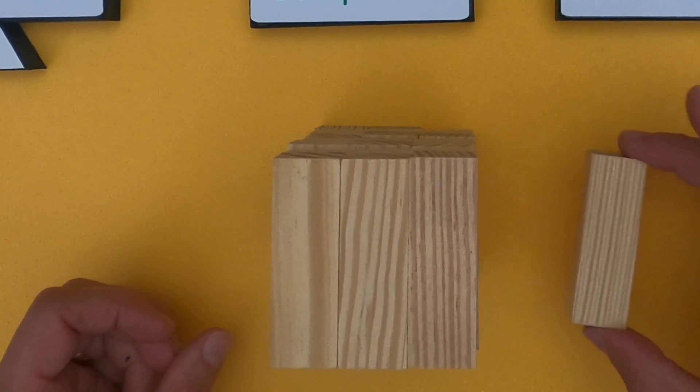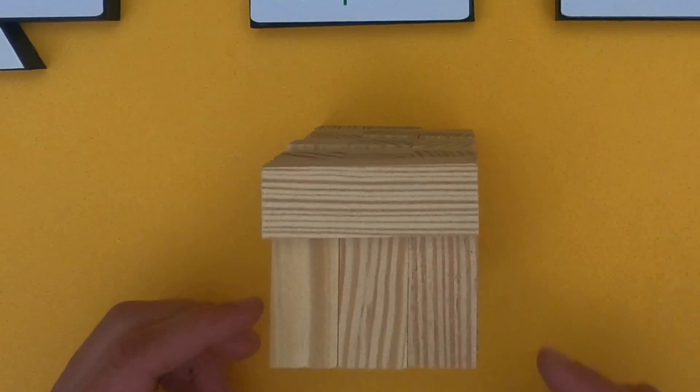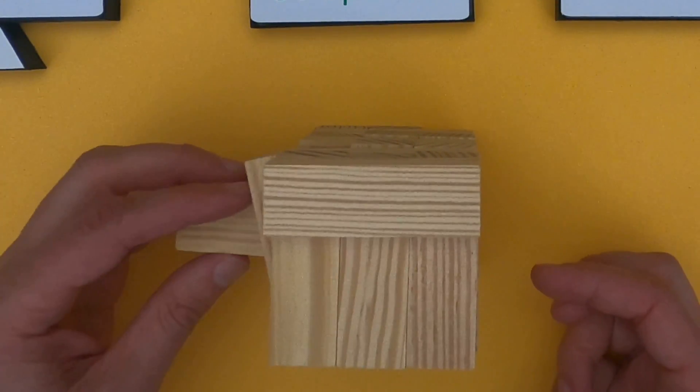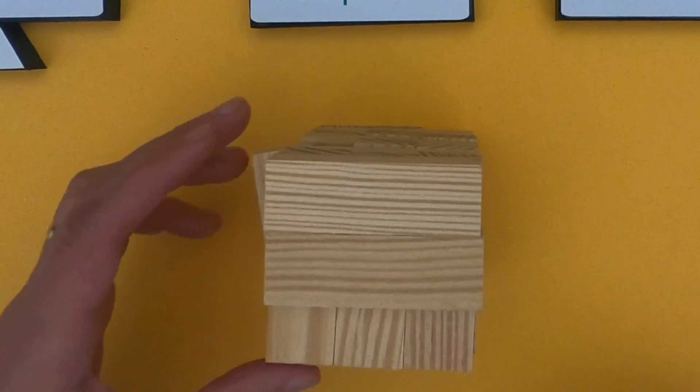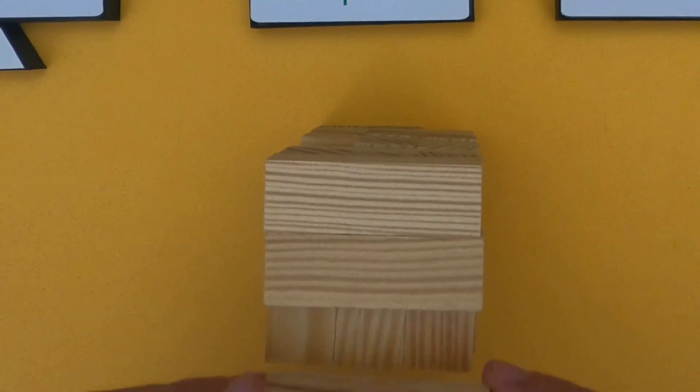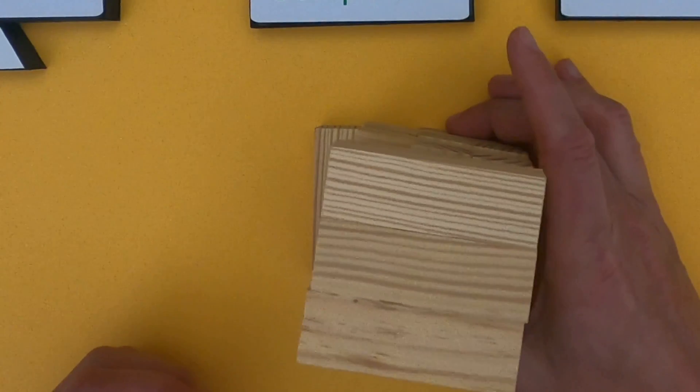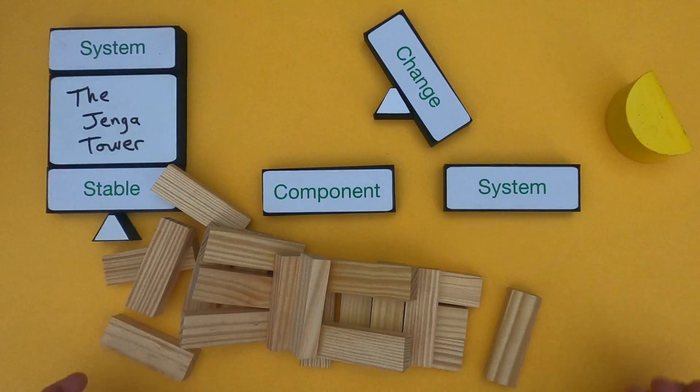I'm going to remove this block here - there's not much change. Let's see, I could remove this block here - there's not much change. I'm going to try to remove that final block and we have big change. Let me clean this up.